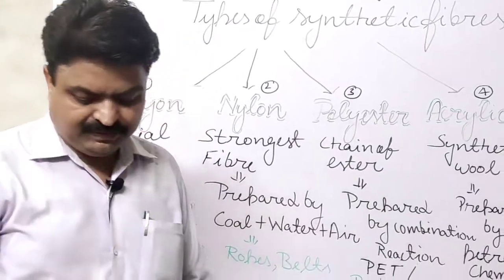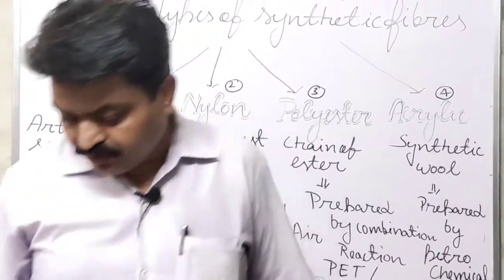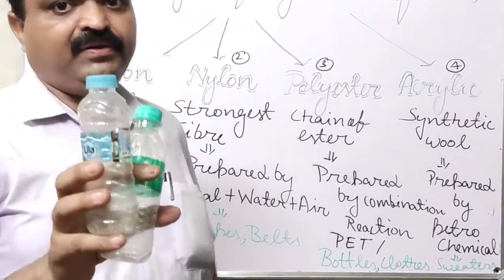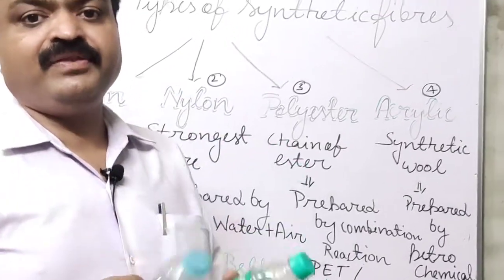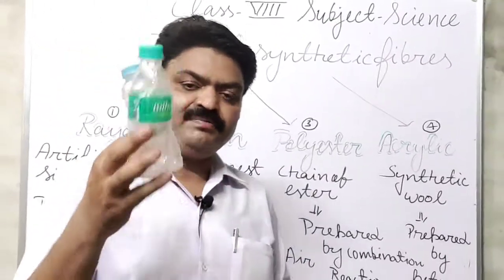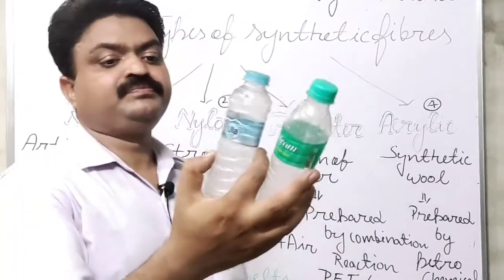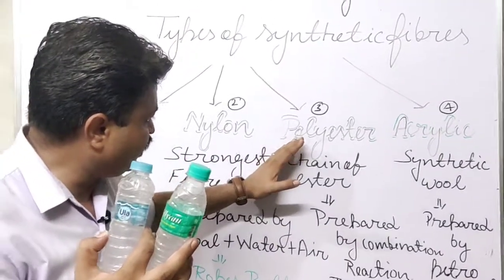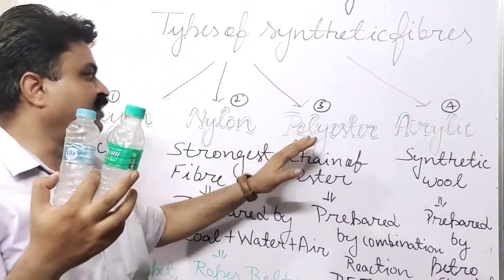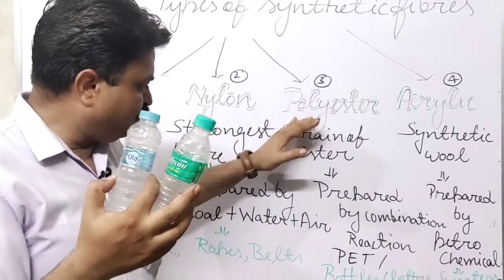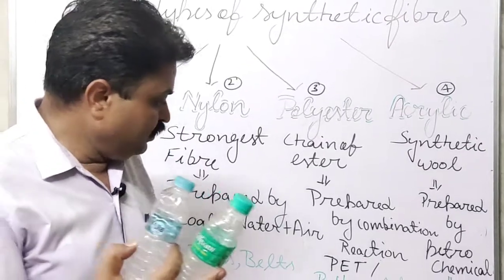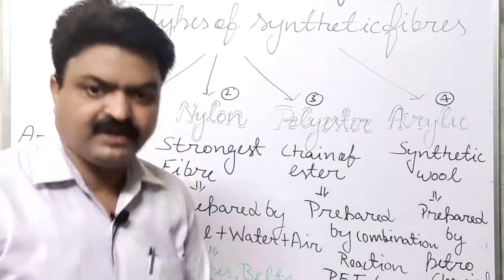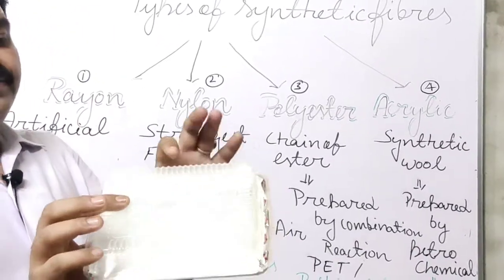PET is used to prepare the bottles in which we store water. The mineral water that we purchase from the market is packed in bottles prepared by which synthetic fiber? They are prepared by polyester — specifically PET. This type of storage boxes are also prepared by PET.